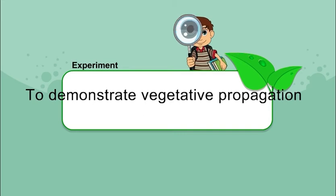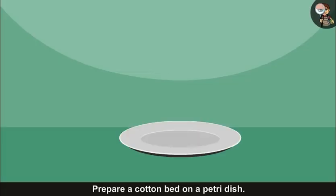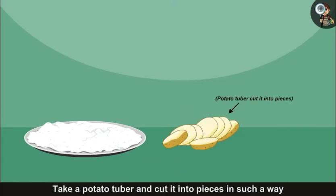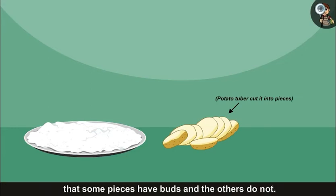To demonstrate vegetative propagation, prepare a cotton bed on a petri dish. Take a potato tuber and cut it into pieces in such a way that some pieces have buds and the others do not.